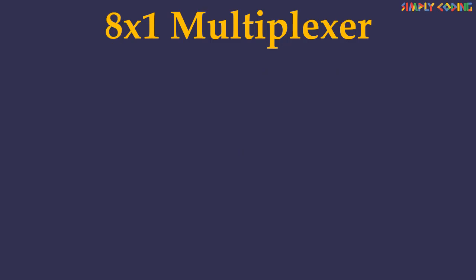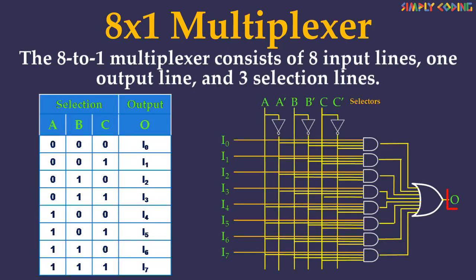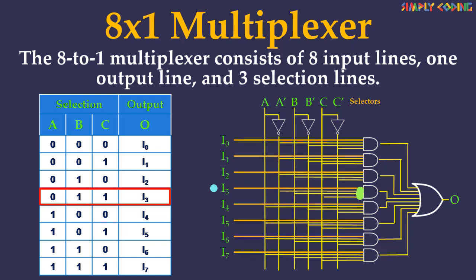Now let's take a look at the 8-to-1 multiplexer. The 8-to-1 multiplexer consists of 8 input lines, 1 output line and 3 selection lines. The circuit shown is an 8-to-1 multiplexer which requires 8 AND gates, 1 OR gate and 3 selection lines. The combination of selection input is given to each AND gate with the corresponding input data lines. All the AND gates are given a selection of input. In this 8-to-1 multiplexer, for any selection line input, 1 AND gate gives a value of 1 and all remaining AND gates give 0. Finally by using an OR gate, all the AND gate outputs are added and the output will be equal to the selected value.